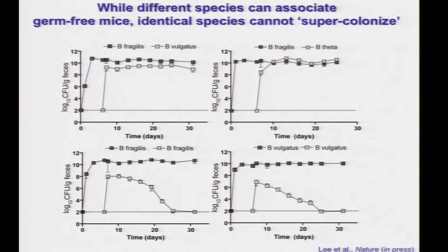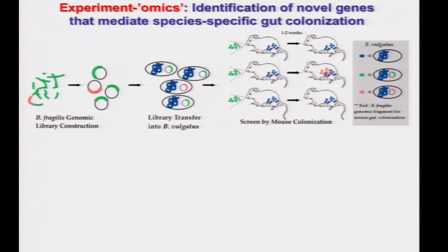If we take an animal mono-associated with Bacteroides and give an antibiotic at the time of challenge to which the initial strain is sensitive but the challenge strain is resistant, we can actually displace the initial strain and get the challenge strain to colonize. This suggested to us that there are some limiting nutrients or limiting space that the initial organism occupies, then excludes or resists colonization by the challenge strain.